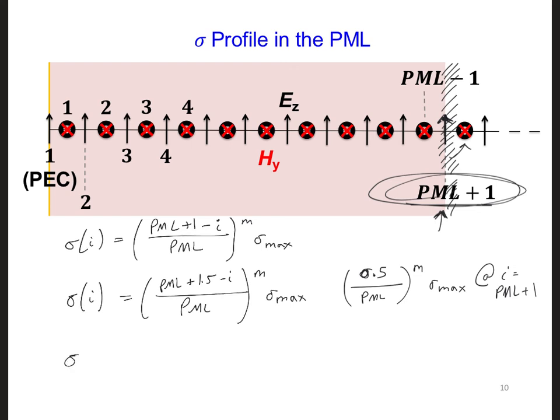So now our equation, the final form of our equation, is going to be PML plus 1.5 minus i in the numerator over PML plus 0.5 in the denominator to the power m times sigma max. These values should only be used when defining the CA and CB coefficients for the ez component for i equal 2 to PML plus 1.